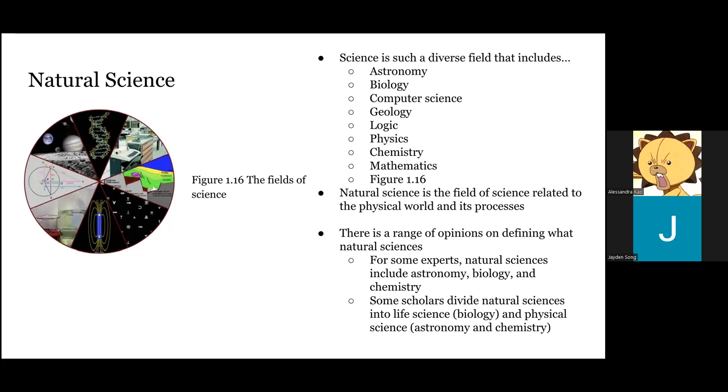Natural science is the field of science related to the physical world and its processes. There is a range of opinions on defining what natural science is. For some experts, natural sciences include astronomy, biology, and chemistry. Some scholars divide natural sciences into life science (biology) and physical science (astronomy and chemistry). Figure 1.16 shows the fields of science.